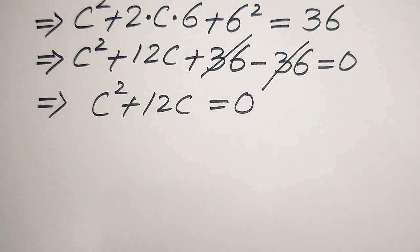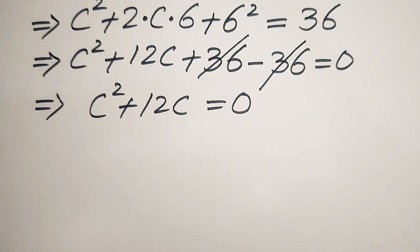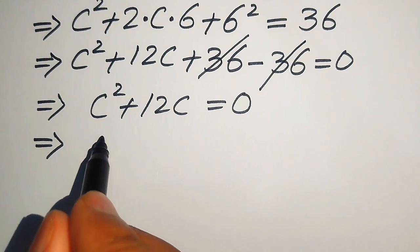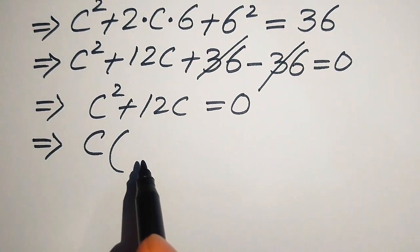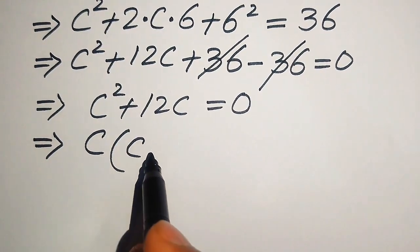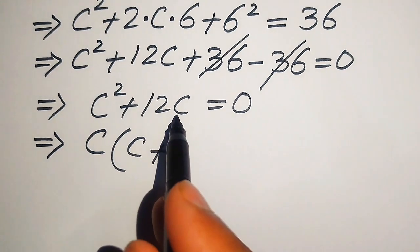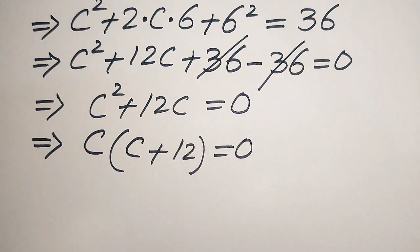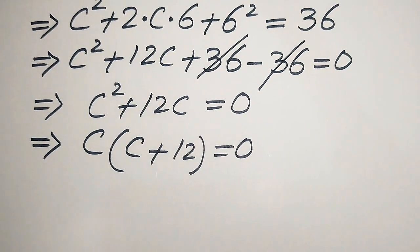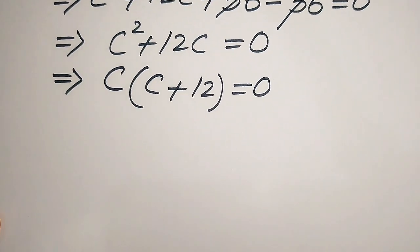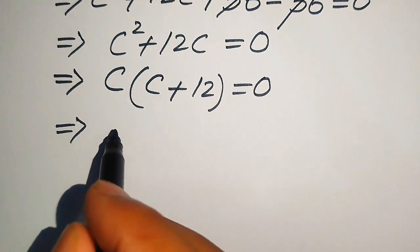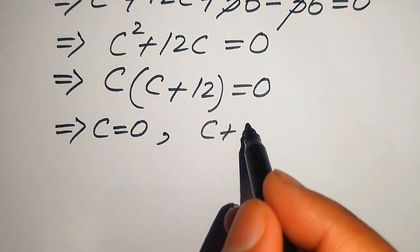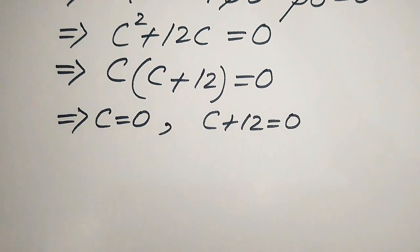Since we are solving for all values of c, both terms involve c, so we factor out c and get c(c + 12) = 0. We then divide this equation into two cases: the first case is c = 0, and the second case is c + 12 = 0.